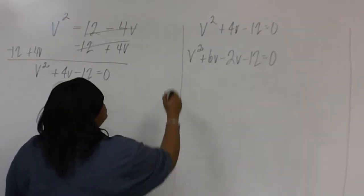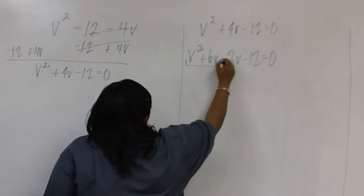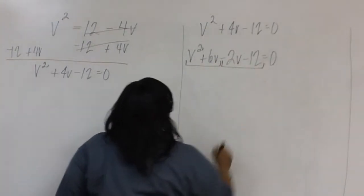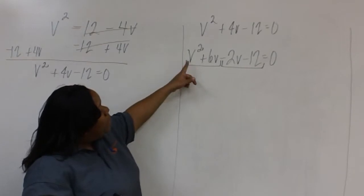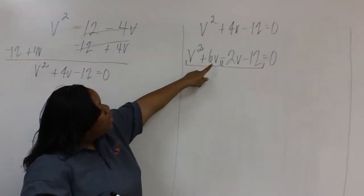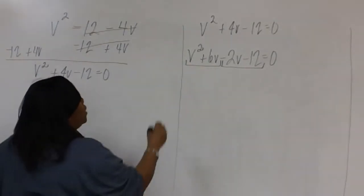Next, we'll group. In the first group, notice that V is common to both terms. We'll factor out the V with the lowest exponent.